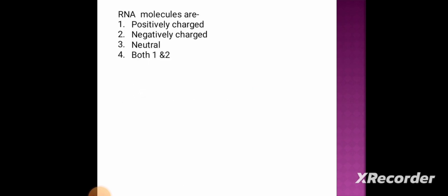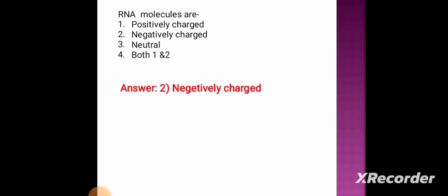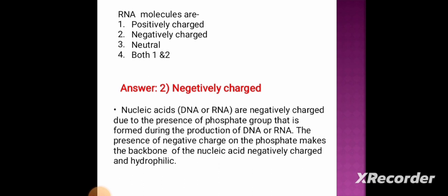Once the initiation stage is finished, the sigma factor is dissociated from the complex and RNA polymerase continues elongation on its own. Next question: RNA molecules are — option 1: positively charged, option 2: negatively charged, option 3: neutral, option 4: both 1 and 2. The correct answer is option 2, negatively charged. Nucleic acids (DNA or RNA) are negatively charged due to the presence of phosphate groups, making the backbone of the nucleic acid negatively charged and hydrophilic.